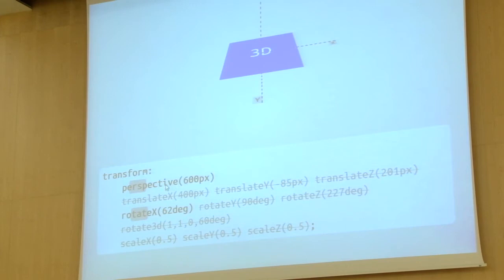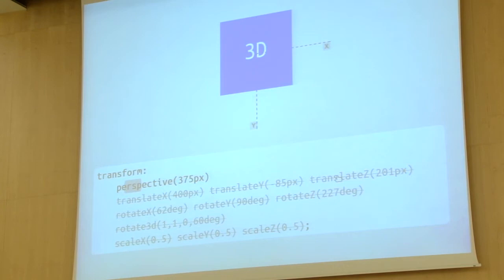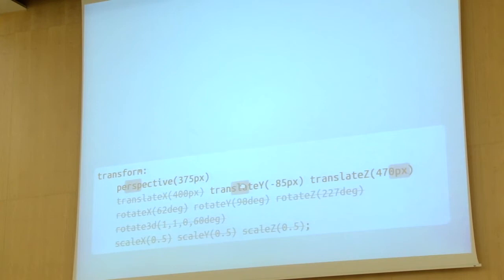Let's move back to our example. Let's define our perspective as quite a small number — 300 pixels — and remove the rotation. Now we can see that moving this square on the Z axis actually makes it bigger, so it feels like it is closer to us.